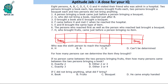Since E brought a bouquet, E is one of the two bouquet-bringers. Point five says E and B brought the same type of item, so B also brought a bouquet. Therefore, the first and last persons are E and B, in some order.